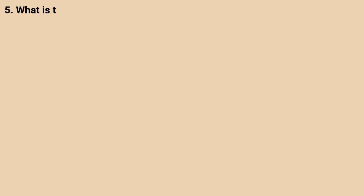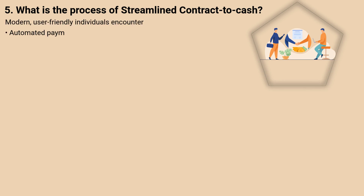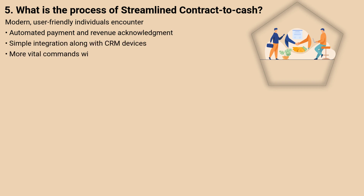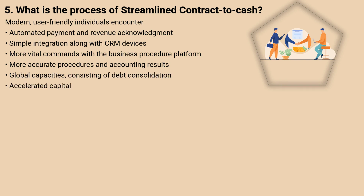5. What is the process of streamlined contract-to-cash? Modern, user-friendly individual experience, automated payment and revenue acknowledgement, simple integration with CRM devices, more vital controls with a business procedure platform, more accurate procedures and accounting results, global capacities consisting of debt consolidation, and accelerated capital.